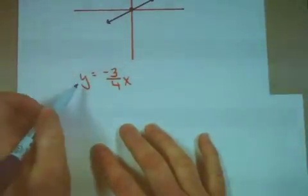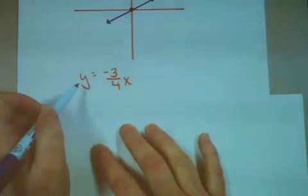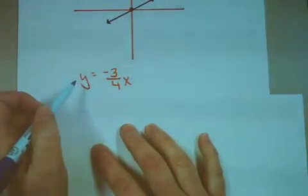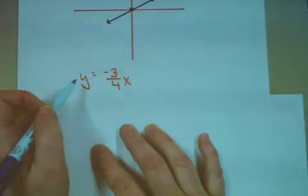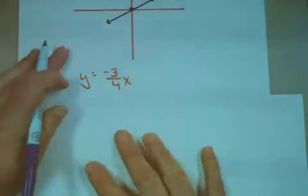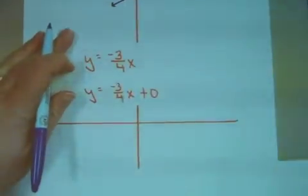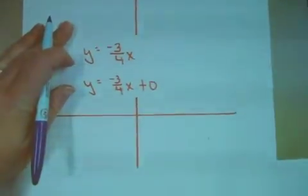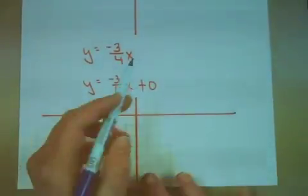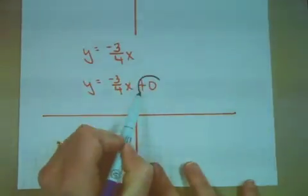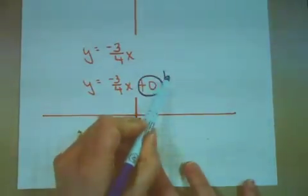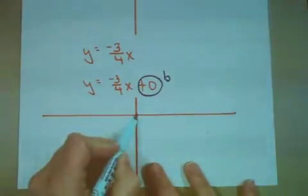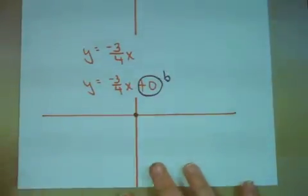Let's look at this one: y equals negative 3 fourths x. What value should we start with? I need to remember that there's an invisible 0 there, and this is my b value, so I'm going to start at 0, the origin.